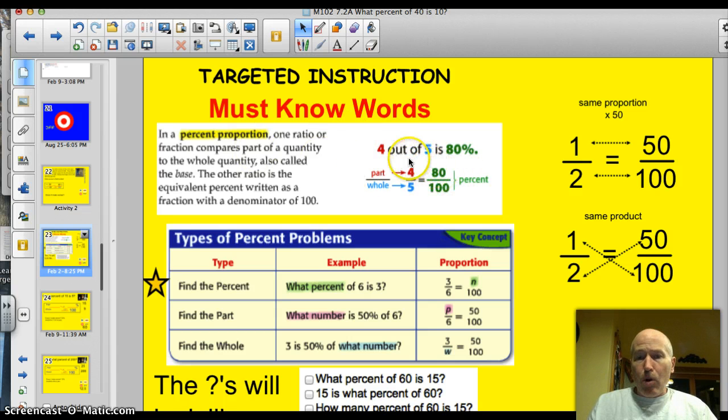In a percent proportion, on one side you have a fraction or a ratio like 4 to 5 or 4 out of 5. And on the other side, you have an equivalent percent. 4 out of 5 is equal to 80%. Let's just check that. Remember my little trick going diagonally? 4 times 100 is 400. 5 times 80 is 400. Therefore, we know that those are equal fractions.